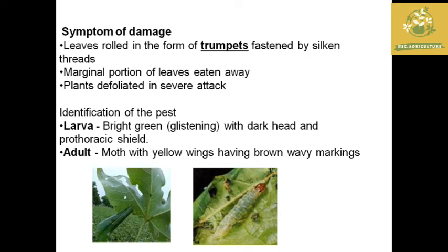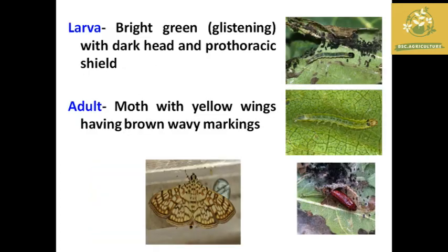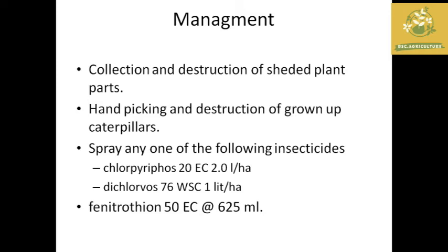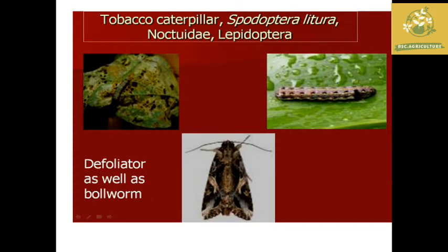The larva of the leaf roller is blister green in color with a dark head and prothoracic shield. The adult has yellow wings with wavy markings. Pictures of the leaf roller are shown.